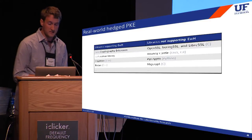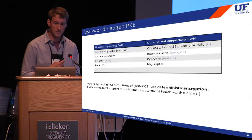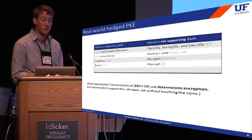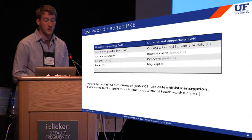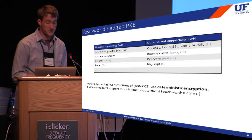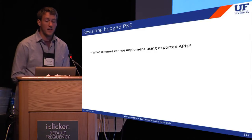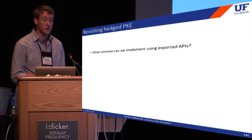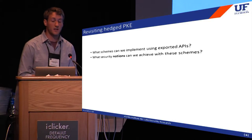It's also worth noting that Encrypt with Hash is not the only way to hedge PKE. Bellari et al. proposed a couple of solutions involving deterministic encryption, but such schemes are not implemented in common libraries and you can't use them without touching the coins. These observations led us to revisit the theory of hedge PKE and see if we couldn't nudge it a little closer to practice. We're guided by two basic questions: first, what simple and efficient schemes can we implement using APIs exported by common libraries? And second, what are the strongest security notions we can hope to achieve with these schemes?